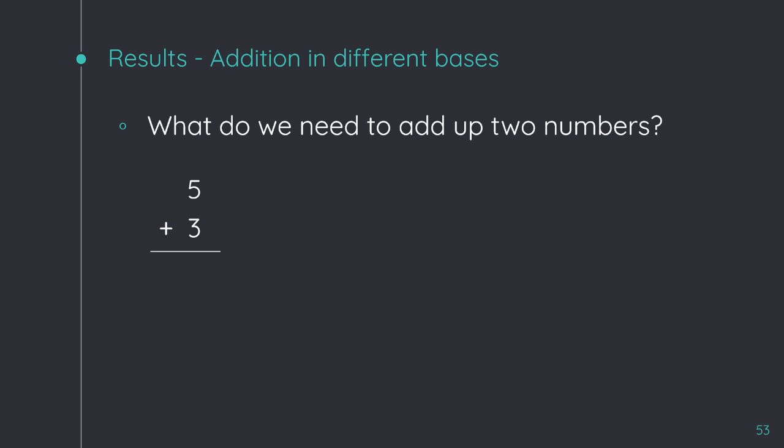Before I go on with the addition problem, I want to ask you, what do we need to add up two numbers? 5 plus 3 is 8, so we need the two digits. But, what happened with these other two numbers? 56 and 34 is 90. In this case, 5 and 3 don't sum 8, but 9. We also need to remember the carry, and this is the key to understand the potential of the dual network.